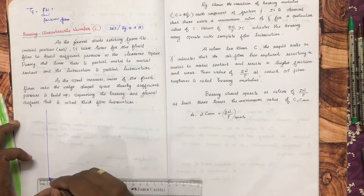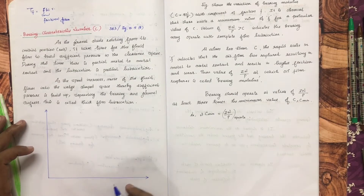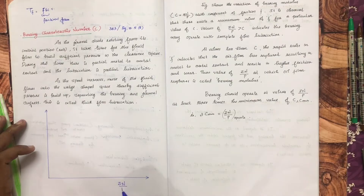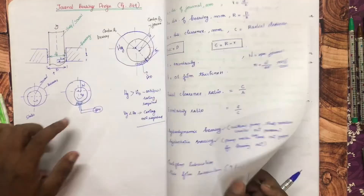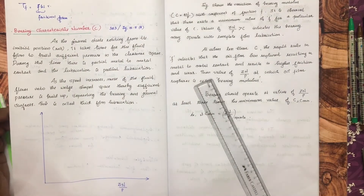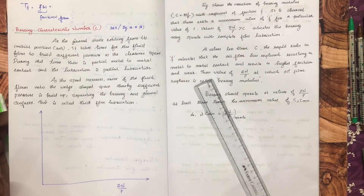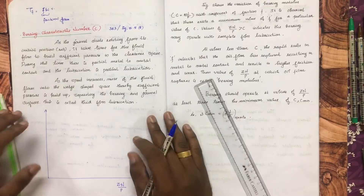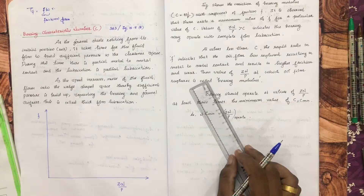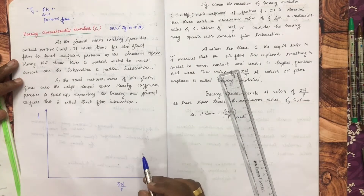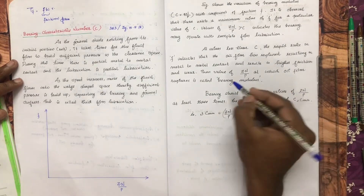The Bearing Characteristics Number is expressed as Zn by P (Zn/P). On the X-axis is the Zn/P value. Here, Z is the dynamic viscosity of the oil film, N is the rpm of the shaft, and P is the pressure. This is plotted against the coefficient of friction — this is a plot of the bearing characteristic number.